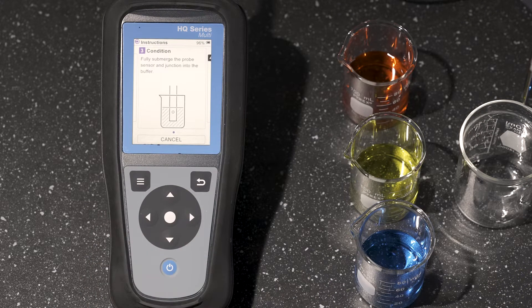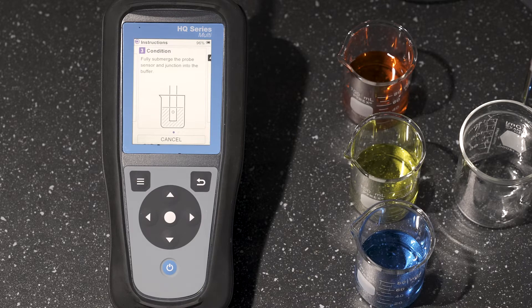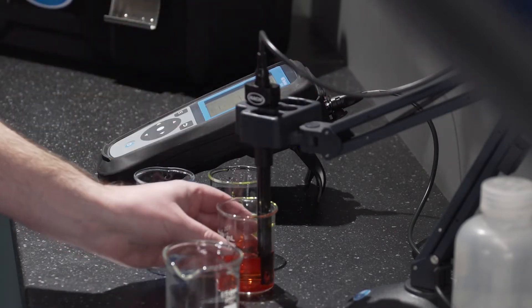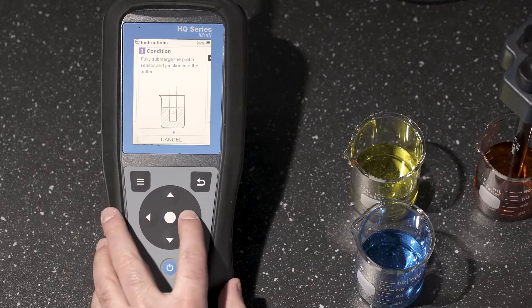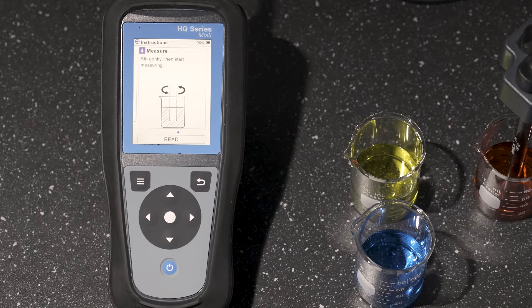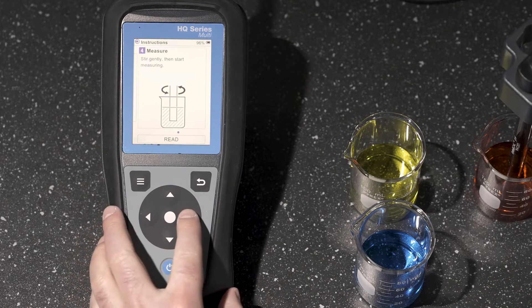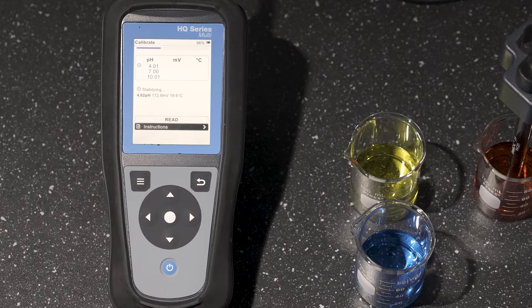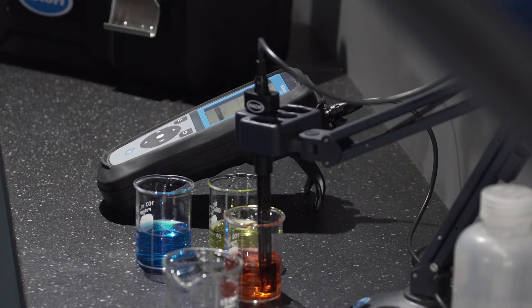Fully submerge the probe sensor and junction into the buffer. Gently stir and then start measuring. You can see the stabilization bar coming across the top and it is reading very close to that 4 buffer.